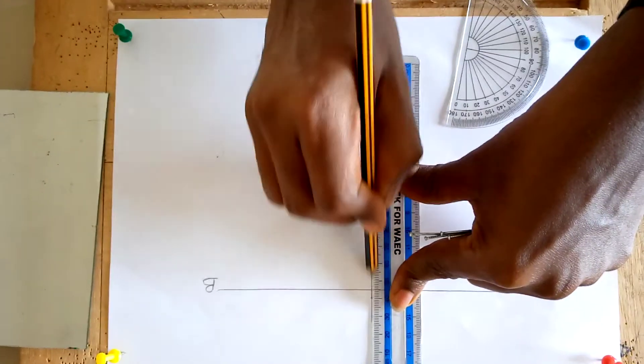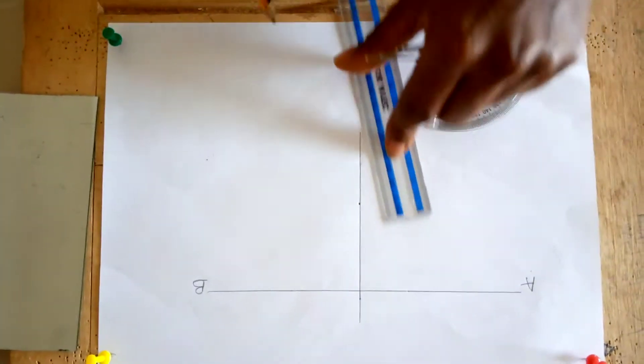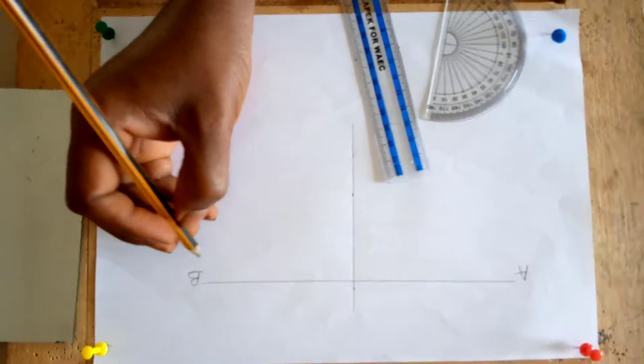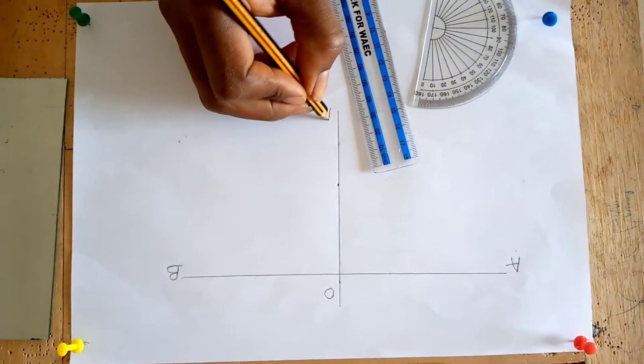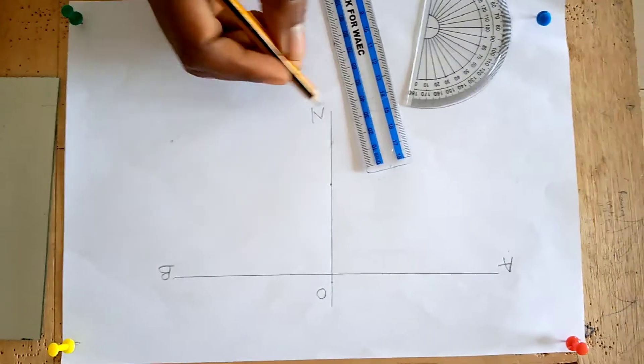Join these two points with a straight vertical line which must be perpendicular to AB, and call this point O and here N. This ON is serving as your normal.